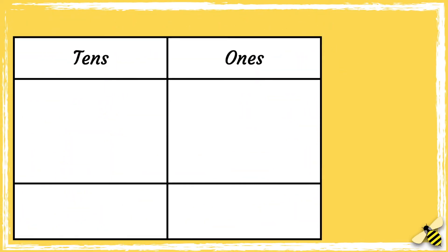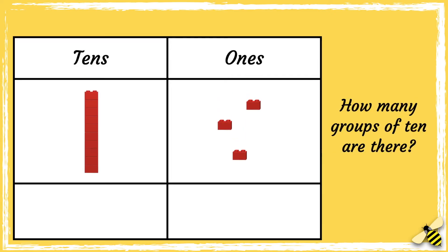Here is a place value grid. What number is shown on the grid? Let's start by looking at how many groups of ten there are. There is one group of ten. Now let's see how many ones there are. There are three ones. So the number is 13.